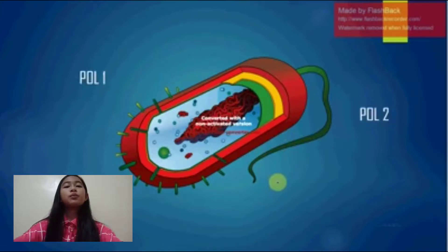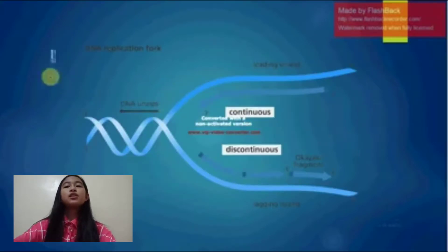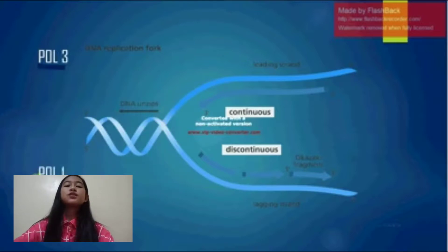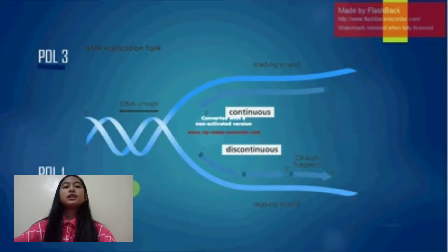Bacteria have at least three distinct DNA polymerases: pol 1, pol 2, and pol 3, that is largely involved in chain elongation. Pol 3 can then take over, but it eventually encounters one of the previously synthesized short RNA fragments in its path. At this point, pol 1 takes over, using its 5' to 3' exonuclease activity to digest the RNA and fill the gap with DNA until it reaches a continuous stretch of DNA.